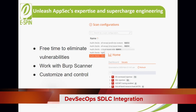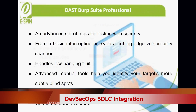Unleash AppSec expertise and supercharge engineering. Free time to eliminate vulnerabilities — always-on scanning has your back. Smart prioritization will save your time when detected threats begin to stack up. Work with Burp Suite's scanner: gold-standard scanning powered by PortSwigger research and trusted at over 12,000 organizations worldwide. With remediation guidance for every bug, designed to help you scan smarter. Customize and control with custom scan configurations to help you hunt down every tricky bug while minimizing false positives.